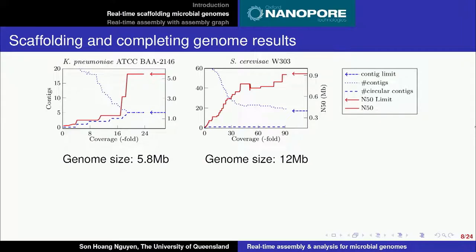Here's the result using our NP-SCAP pipeline on two datasets: Klebsiella and Yeast Saccharomyces. When the MinION device is running, it outputs more data, so you have more coverage on the x-axis, and then the N50 increases and the number of contigs decreases. You can see the arrow which represents the value of the reference. In the case of Klebsiella, we have a perfect complete assembly. With Saccharomyces, it wasn't perfect, but it's very close to the value of the reference.